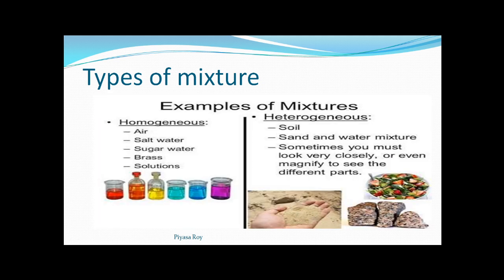Examples of homogeneous mixtures: air is a mixture of different gases mixed homogeneously; salt water, sugar water; brass — an alloy of copper and zinc; and different solutions where all particles are uniformly mixed and we cannot see any particle separately. For heterogeneous mixtures: soil components are unevenly distributed; in sand and water, the sand settles at the bottom and water remains on the upper layer.